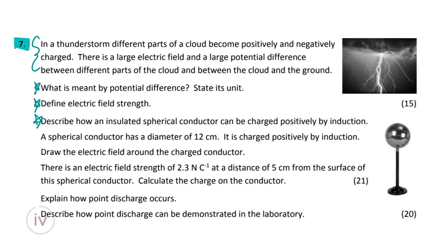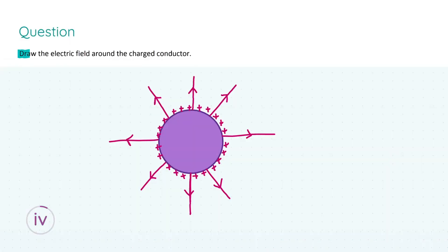Now of course we are back to our question, and down here we are told that a spherical conductor has a diameter of 12 centimeters. Note that it says diameter, not radius, and that it is charged positively by induction. We're asked a couple of questions with this information. First things first, we're asked to draw the electric field around the charge conductor. We are told that it is positively charged, therefore this will dictate the electric field lines which we will draw in this diagram. The purple sphere is obviously going to be our spherical conductor, and we need to have what's called radial field lines, which is what I have here.